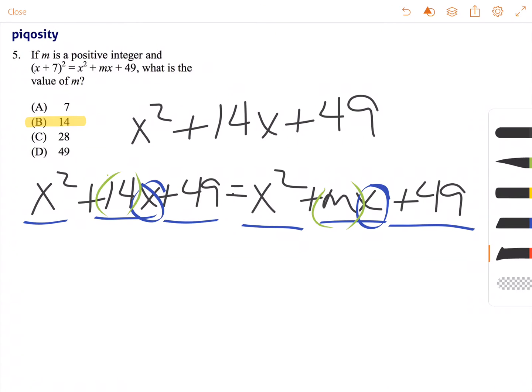Now another way that you can figure this out is just by getting rid of values until you just have the m left. So we can subtract x² from both sides. Those cancel out. We can subtract 49 from both sides.